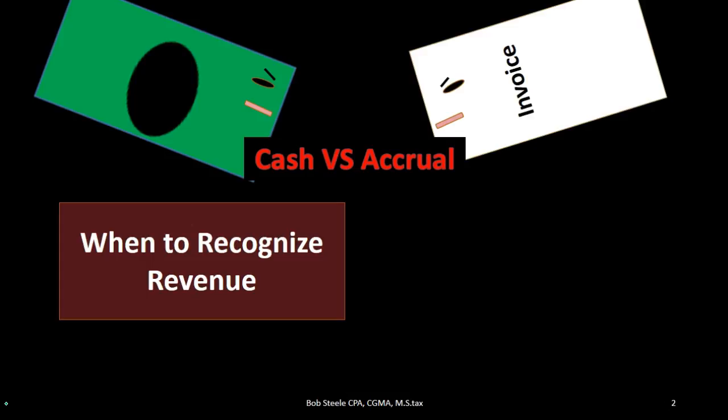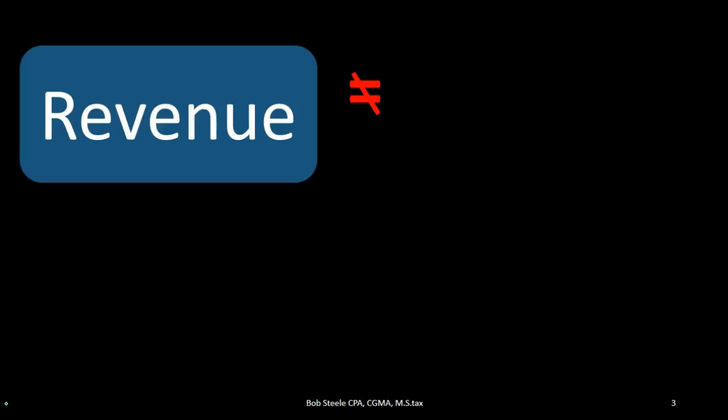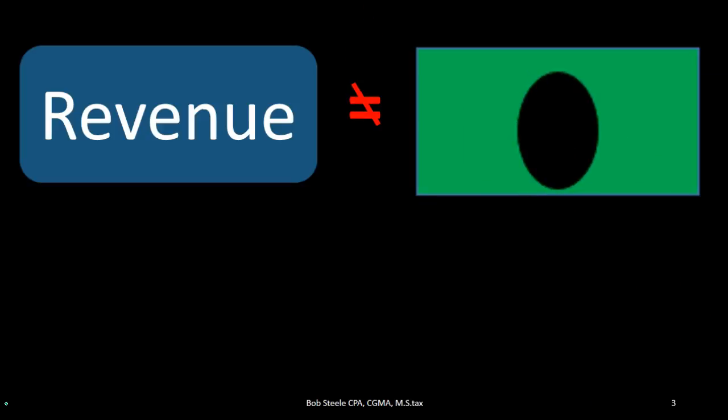What we're talking about here is when should we recognize revenue and when should we recognize expenses. These are the income statement accounts — the timing accounts. Therefore, the difference between these two methods is just a timing difference. What we need to understand is that revenue is not equivalent to cash. Revenue is the act of us earning. Cash is one form of payment; we could have other forms of payment, but cash is the main one. Even if we think under a cash method, we don't want to equate revenue and cash.